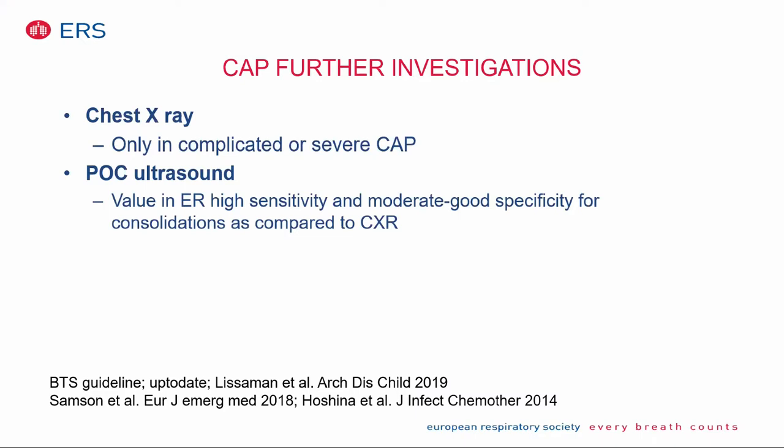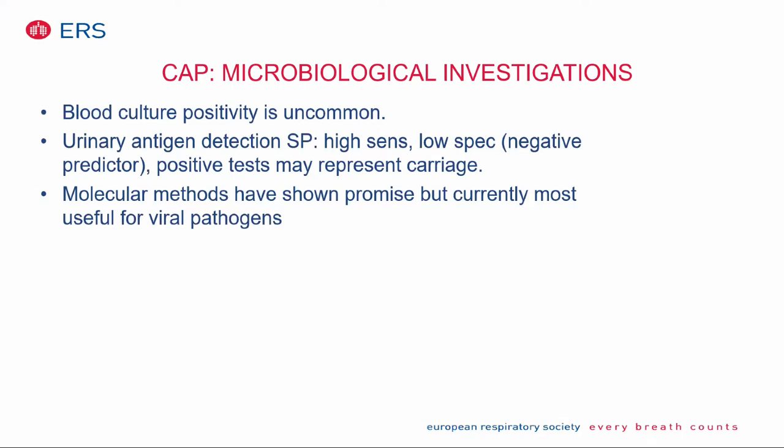A chest X-ray is only needed in children with complicated or severe CAP. In some countries there is a lot of attention for point-of-care ultrasound at the ER, which has quite high sensitivity and moderate-to-good specificity for consolidations compared to chest X-ray, though this depends on physician experience. Other tests include antigen detection of strep pneumoniae — high sensitivity but very low specificity because it may also be positive in children who carry strep pneumoniae in their upper respiratory tract. Molecular methods show promise but are currently most used for viral pathogens.